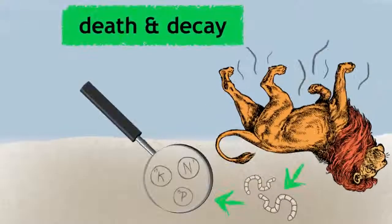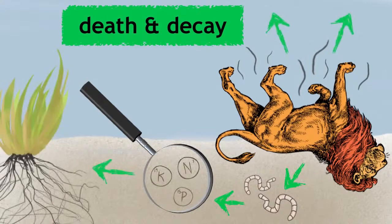Cycles are often completed by death and decay, which is vital for all organisms as they return many vital nutrients to the producers and the atmosphere.